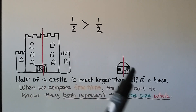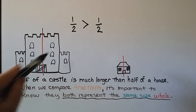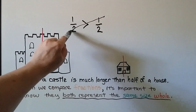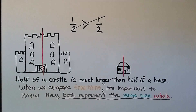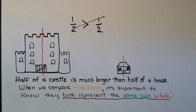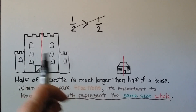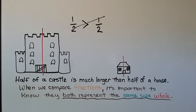These are not the same size whole, so we can't really do this comparison because it's not fair. Make sure they represent the same size whole. Otherwise, we could say a half is greater than a half because they're representing two different size objects.